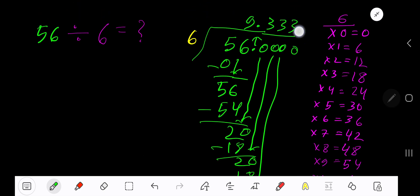Now you can place 3 dot. Our answer is 9.333 dot dot dot. You can place a bar over 3 to mean that this 3 is repeating. 9.3 bar is another form of writing the answer.